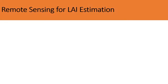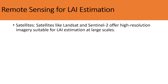Now let's talk about the techniques we can use in remote sensing for Leaf Area Index estimation. There are many techniques we can apply to identify LAI. When working with satellite imagery, you can use Landsat, Sentinel, or any other high-resolution imagery suitable for LAI estimation at large scale.